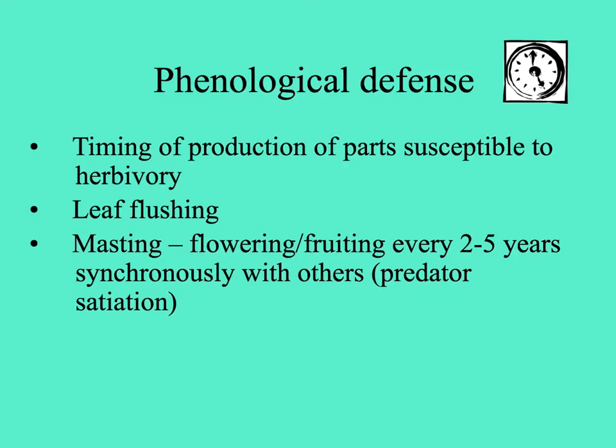Some plants use phenological defense by timing the production of susceptible parts to occur all at once or sporadically. This includes plants that flush all their new leaves simultaneously, swamping potential herbivores, and plants that mast flower and fruit — producing fruit every two to five years synchronously with others in the population — causing a crash in the predator population and ultimately escaping heavy herbivory.